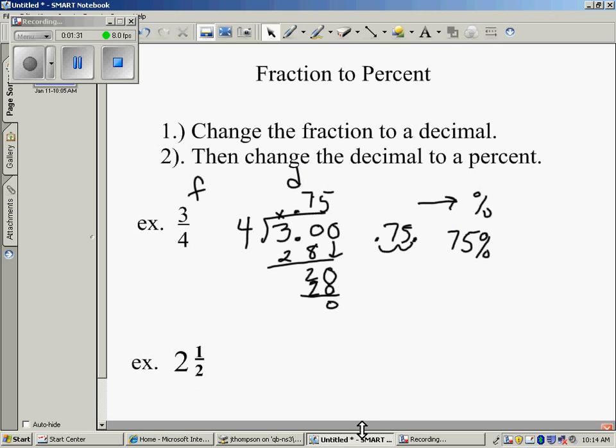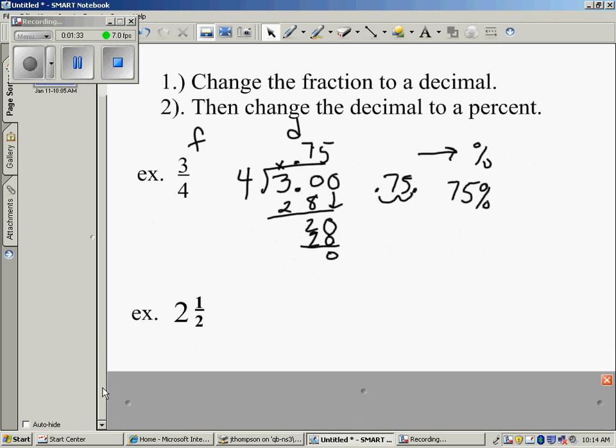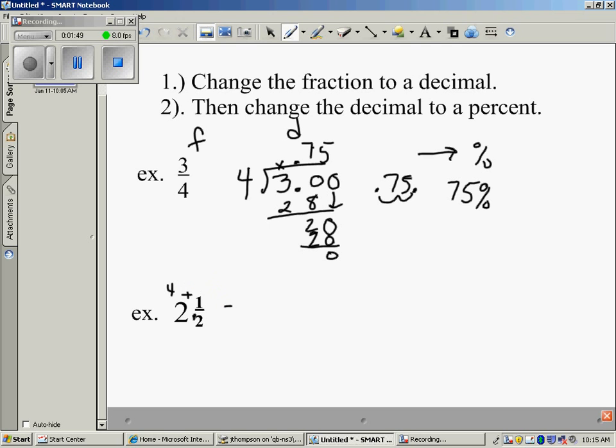In your second example, you see that you have 2 and a half. You have a mixed number. The first thing to do with your mixed number is to turn it into an improper fraction. A reminder of how to do that is we're going to take 2 and we're going to multiply it by 2 and get 4 and then we're going to add the 4 to the numerator of 1 and that will give us our improper fraction of 5 over 2. So we've taken our mixed fraction and turned it into an improper fraction.